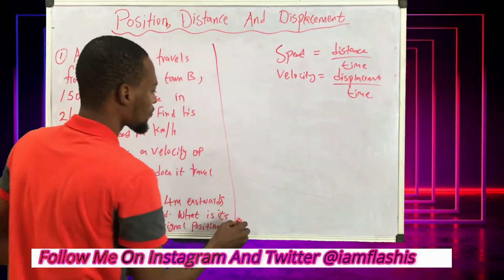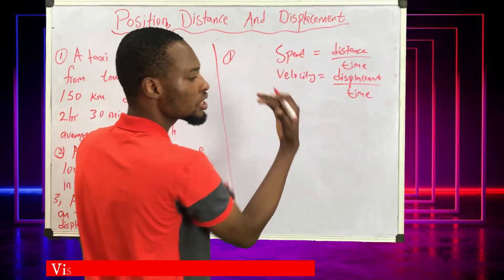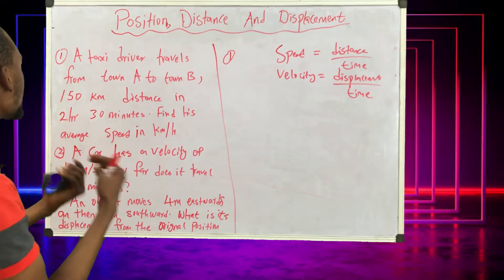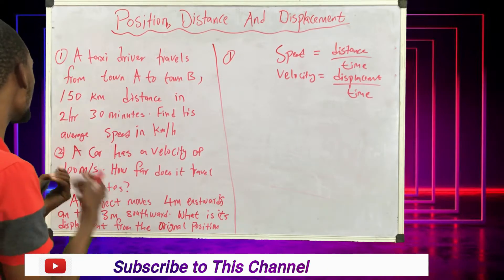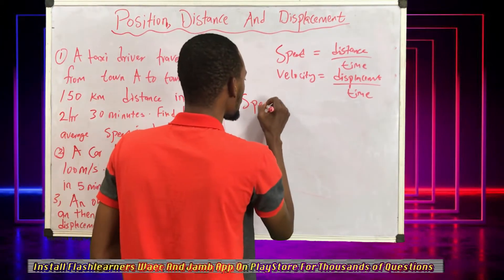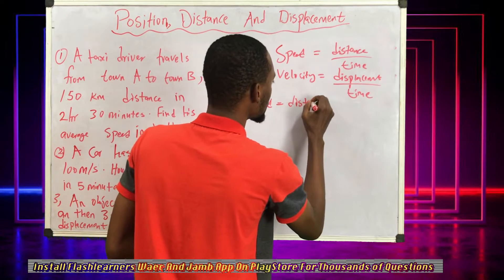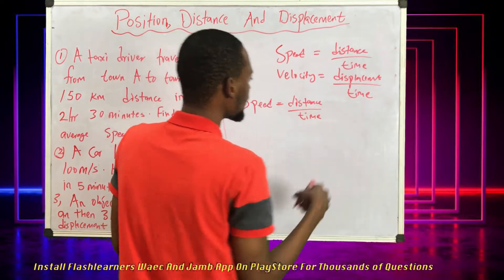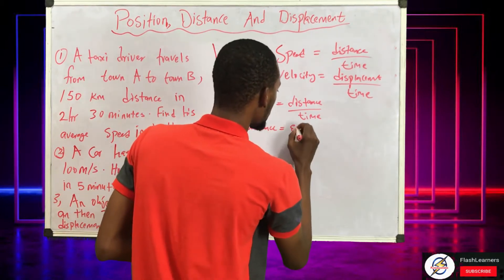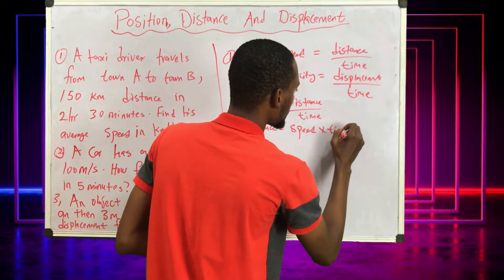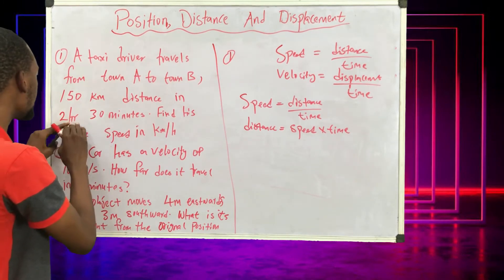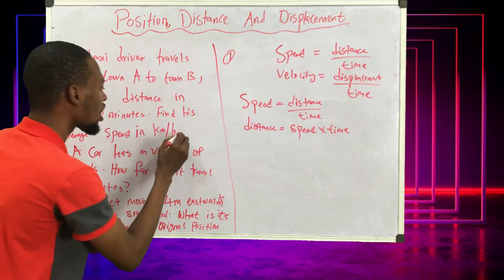Recall that speed is equal to distance divided by time. We are given the distance and the time, and we are looking for speed. Since speed equals distance over time, this implies that distance is equal to speed times time.